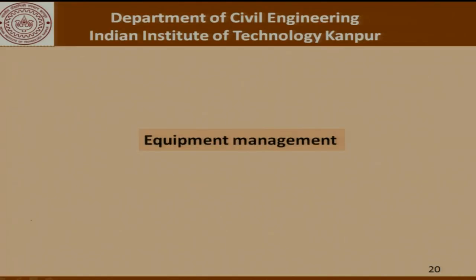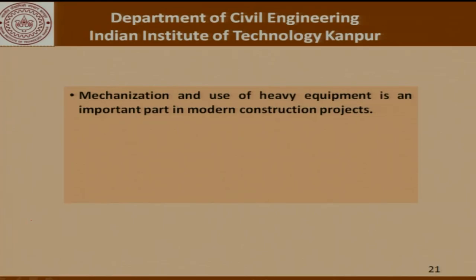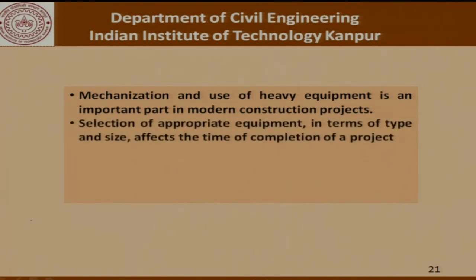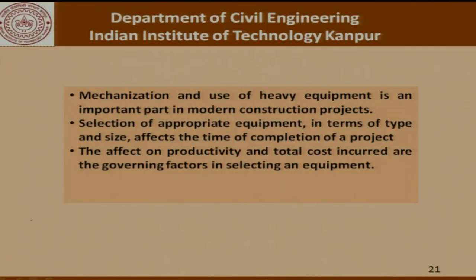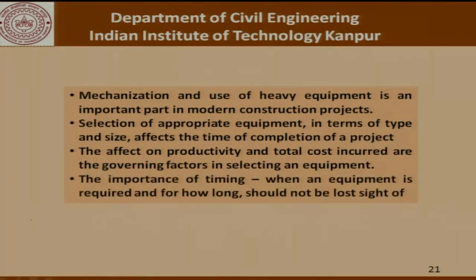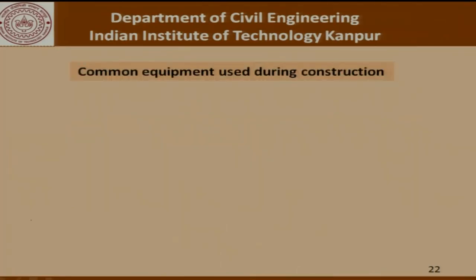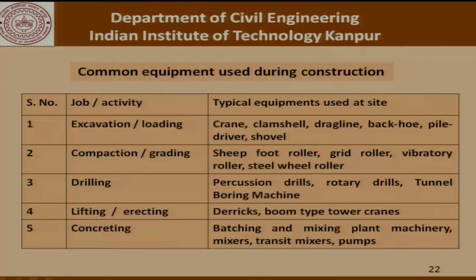With that food for thought, let us move on to the second resource — equipment. Mechanizing equipment is an important part of modern construction projects. Selection of appropriate equipment in terms of type and size affects the time of completion of the project. The effect on productivity and the total cost incurred are governing factors in selecting equipment, and the importance of timing — when equipment is required and for how long — should not be lost sight of. The common equipment used during construction varies depending upon the job or activity involved.